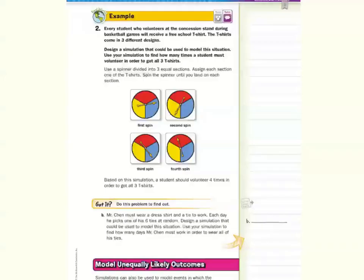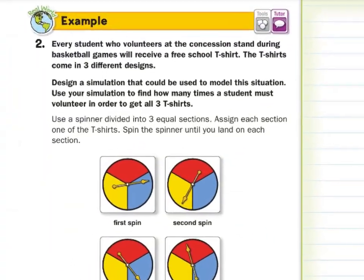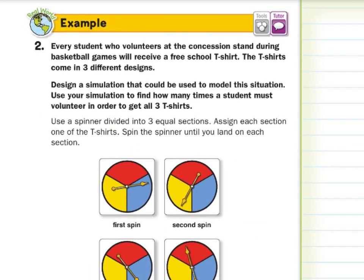In our second guided example, every student who volunteers at the concession stand during basketball games will receive a free school T-shirt. The T-shirts come in three different designs. Design a simulation that could be used to model the situation. Use your simulation to find how many times a student must volunteer in order to get all three T-shirts.